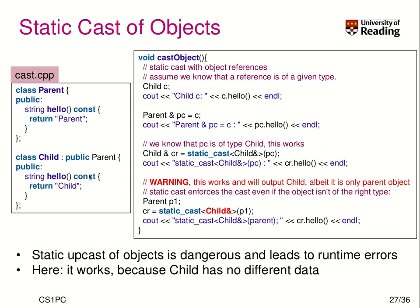We can also use static_cast for objects. Consider this class hierarchy: we have a Parent class with a hello() method that returns the string "parent", and a Child class with a hello() method that returns "child". We create a child object c. Calling c.hello() prints "child".